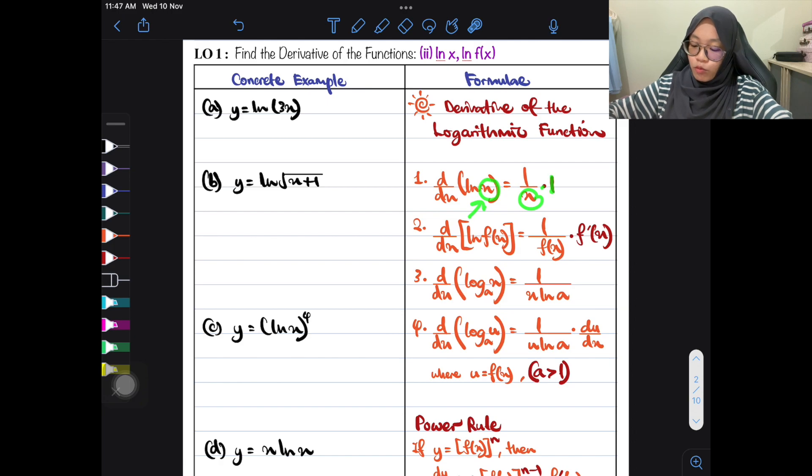This is just literally from this ln x over here, and then times it with 1. Kenapa times it with 1? It is just because differentiate this x, we will get 1. Okay, look at the second formula.